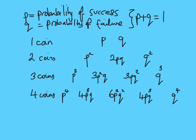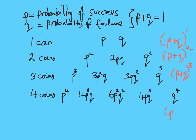Here is my triangle. One coin makes P and Q. Two coins: P squared, 2PQ, Q squared. Three coins: P cubed, 3P squared Q, 3PQ squared, and Q cubed, etc. This is the one you might recognise from expanding double brackets. The first row is just P plus Q to the power of 1. The second is P plus Q squared. Then P plus Q cubed, and the bottom one P plus Q to the power of 4. If I expanded my brackets each time, I would get these expressions, and that will work every time — a really useful result.